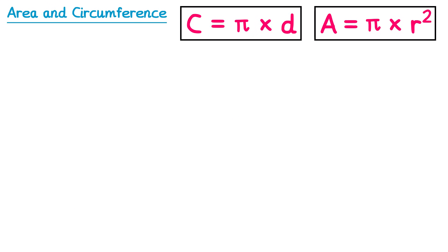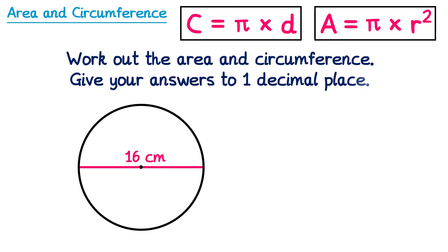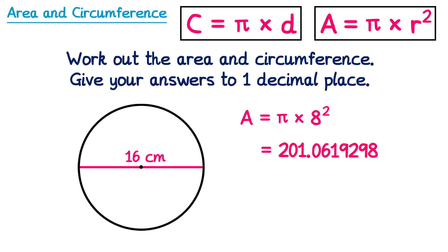Now let's look at a question where we need to work out both the area and circumference. It says to give answers to one decimal place. Feel free to pause the video and give it a try yourself. We'll start with the area: pi multiplied by the radius squared. We've been given the diameter of 16, so the radius is 8. So it's multiplied by 8 squared, which gives 201.0619298 — rounded to one decimal place, that's 201.1 centimetres squared.